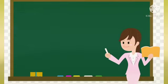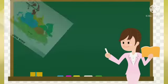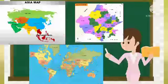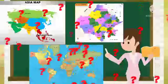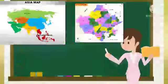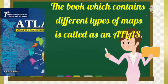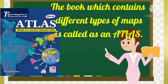Children, now tell me, when many maps are put together in the form of a book, what is it called? Yes, the book which contains different types of maps is called an atlas. Or we can say, a book of maps is called an atlas.